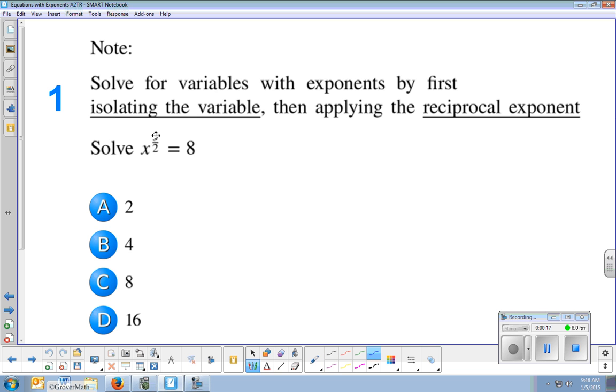We see x to the 3 over 2 equals 8. And so we're solving for x, but it has a complex exponent. It has a fraction exponent here that we need to get rid of.